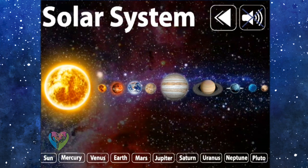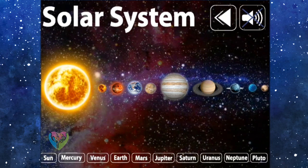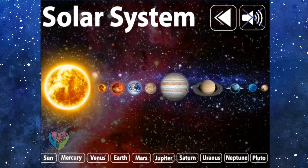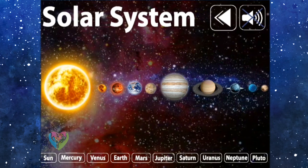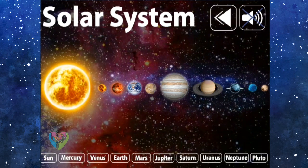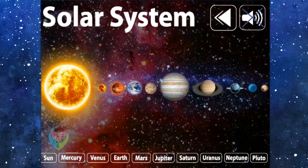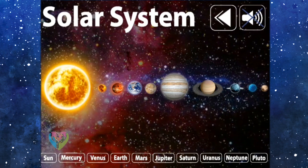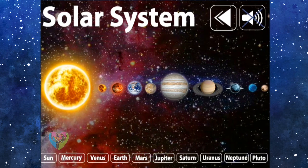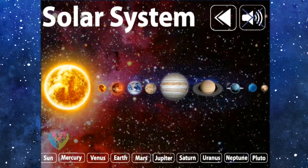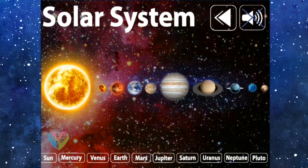The planets include Mercury, Venus, Earth, Mars, Jupiter, Saturn, Uranus, and Neptune. By the way, Pluto is categorized as a dwarf planet since August 24, 2006 by the International Astronomical Union in Prague, the Czech Republic.